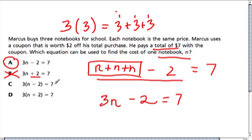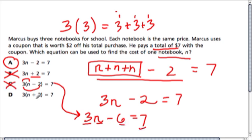The next equation, we should use the distributive property to understand better. We would get 3N minus 6 equals 7. I distributed the three to each part. And this is not what we need. This would be three notebooks with a $6 coupon, and you paid $7. That's not us.